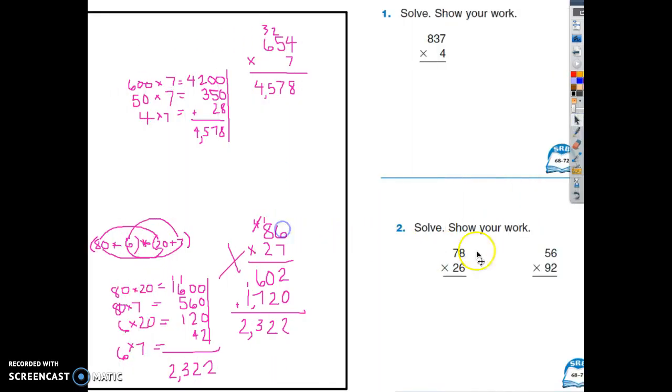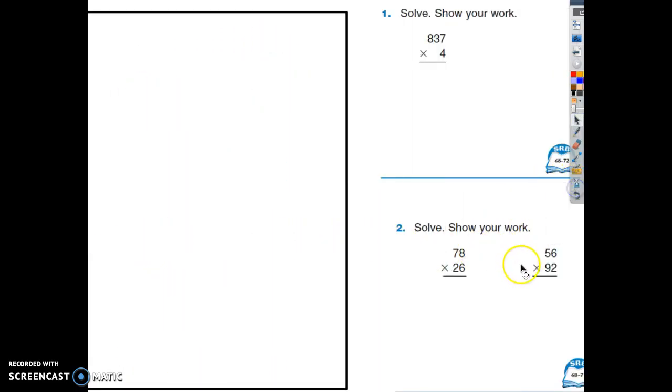I'm going to slide this over here, erase my work. And it is your job now to do a 3-digit times a 1-digit on your whiteboard, 837 times 4. So you will go ahead and write that down on your whiteboard to give me an answer please. You will also do 56 times 92 on your whiteboard. So you need 2 answers on your whiteboard using whatever method works best for you. Press pause while you do that and then come back to check your work. Thanks.